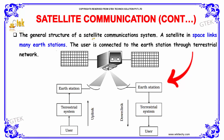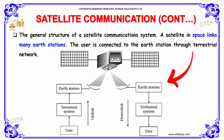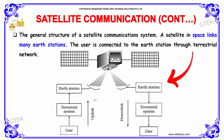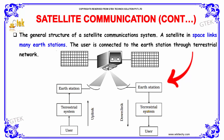The general structure of a satellite communication system is a satellite in space linked to many earth stations. The user is connected to the earth station through terrestrial networks. The terrestrial system sends data to the satellite — that is the uplink — and from the satellite back through the earth station to the user is the downlink.